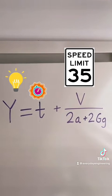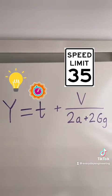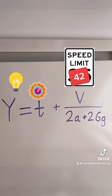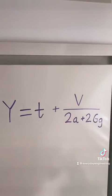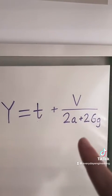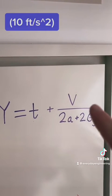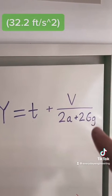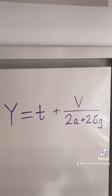V is either the posted speed limit, or many engineers actually use the speed limit plus seven to account for speeding drivers — meaning unsafe drivers are now dictating our signal timings. Little a is the deceleration of a vehicle, big G is the acceleration due to gravity, and little g is the grade of the road.